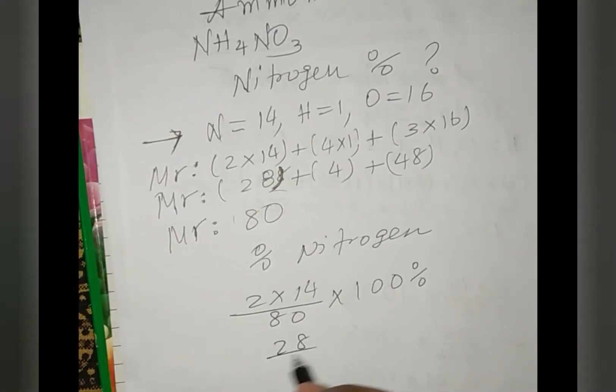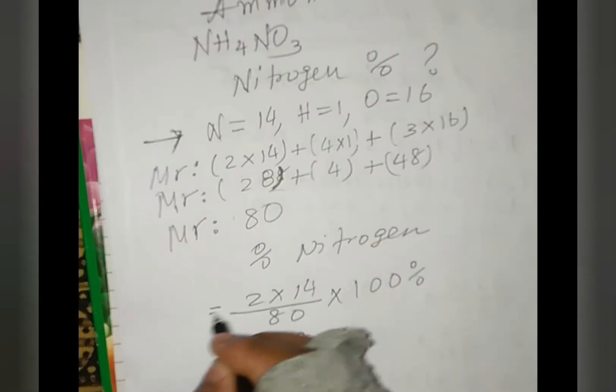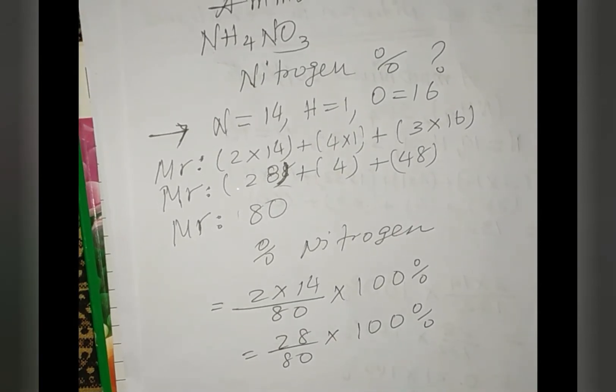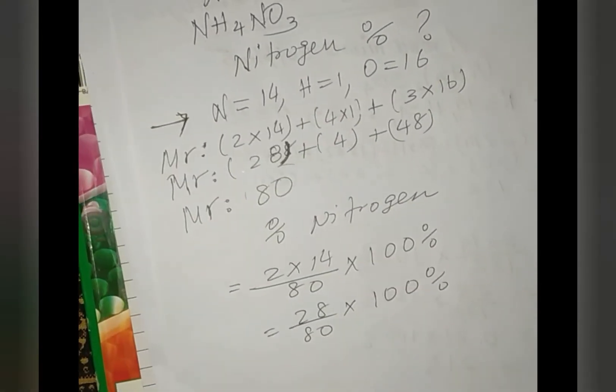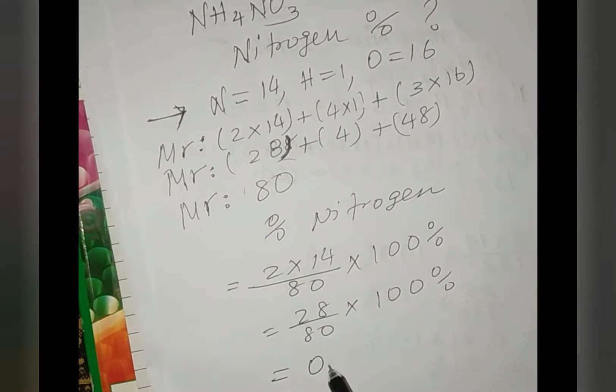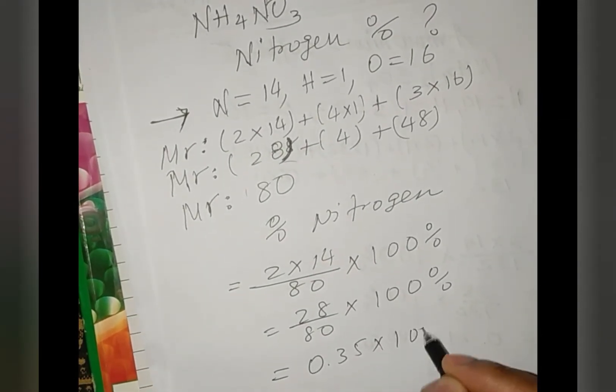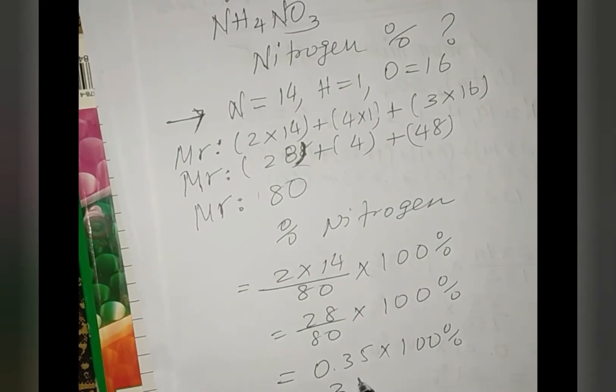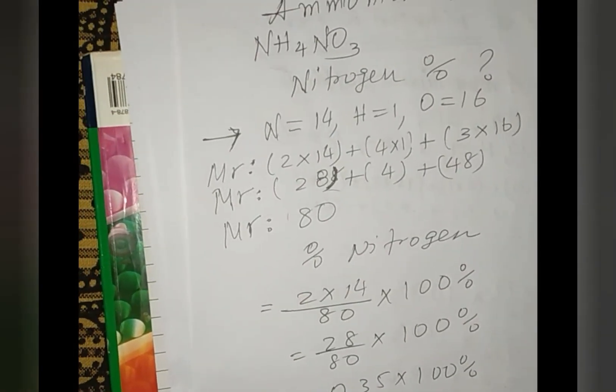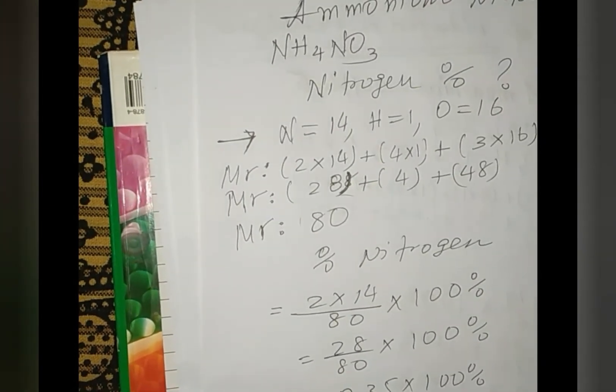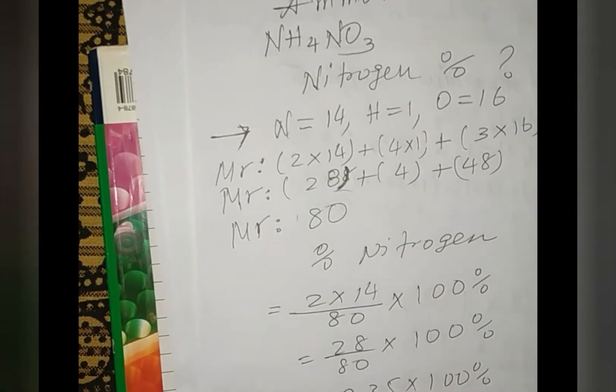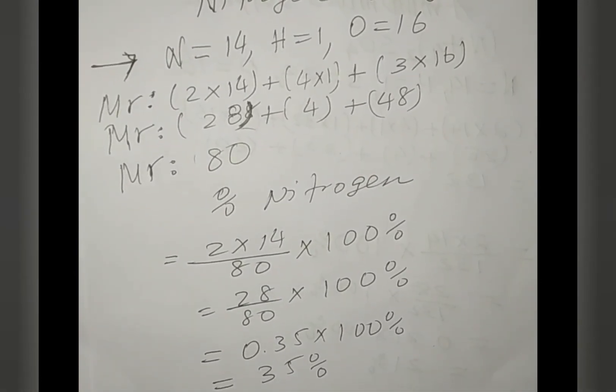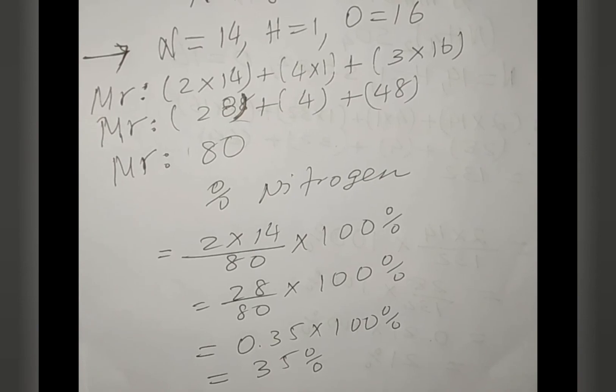This gives us 28 divided by 80, which equals 0.35, times 100%, which equals 35%. So the percentage of nitrogen in ammonium nitrate is 35%. If you enjoyed the video, please don't forget to subscribe for more amazing videos.